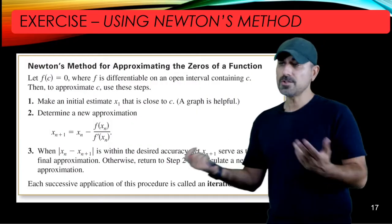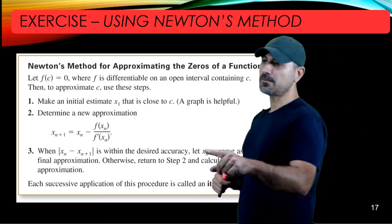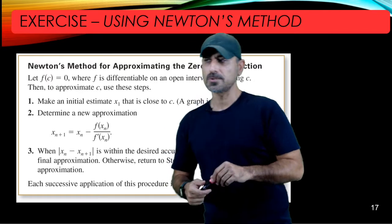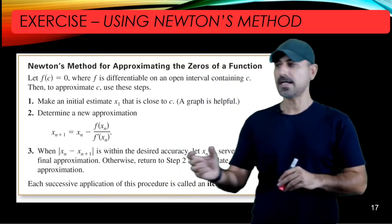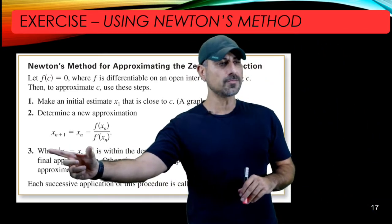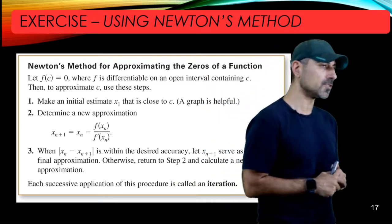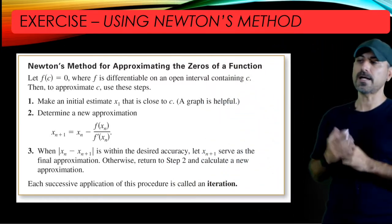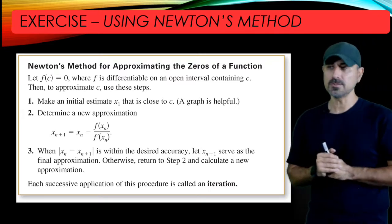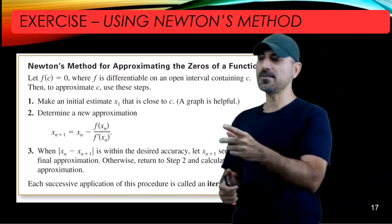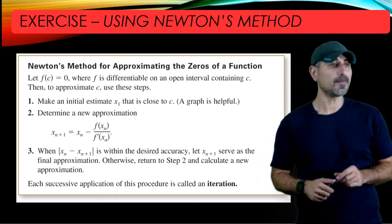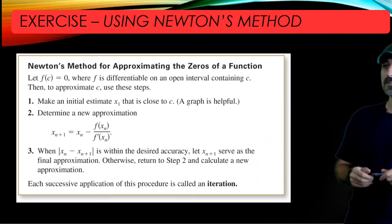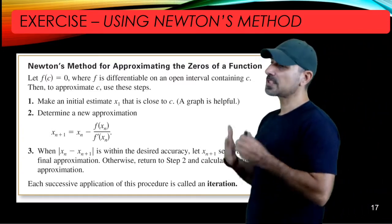When do you stop this iteration? Whenever you reach the desired accuracy. You measure the absolute value of the difference between two successive approximations. If that is less than the desired accuracy, you're getting closer to the root and should stop. x_{n+1} serves as the final approximation.